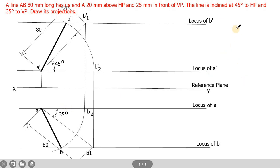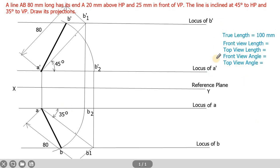At the side of the paper, write the true length, front view length, top view length, front view angle, and top view angle. Measure the lengths using a scale and the angles using a protractor, and write those values. At the bottom of the paper, you can write all dimensions. That's all — thank you. In the next class, we will see some more examples on projection of straight lines inclined to both the reference planes. Thank you.